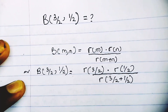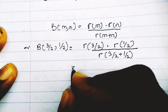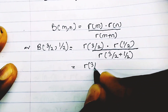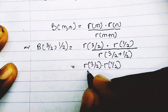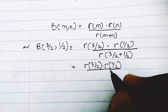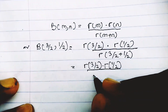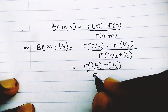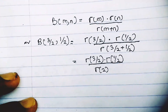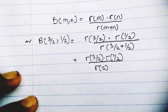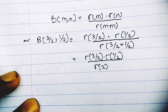Now let's simplify the denominator. We have Γ(3/2) · Γ(1/2) divided by Γ(3/2 + 1/2). Since 3/2 + 1/2 = 2, the denominator becomes Γ(2).